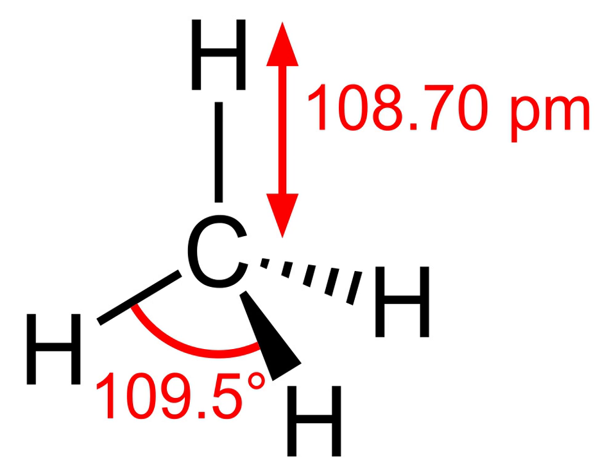Methane is used as a fuel for ovens, homes, water heaters, kilns, automobiles, turbines, and other things. Activated carbon is used to store methane.